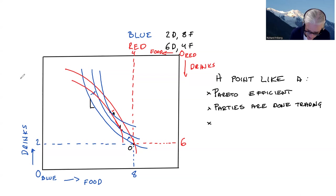The slope of the indifference curve, the marginal utility of food over the marginal utility of drinks for Blue, is equal to the marginal utility for food over the marginal utility of drinks for Red. Okay, so they both value these two goods equally at the margin. It's another way of saying that they're done trading.